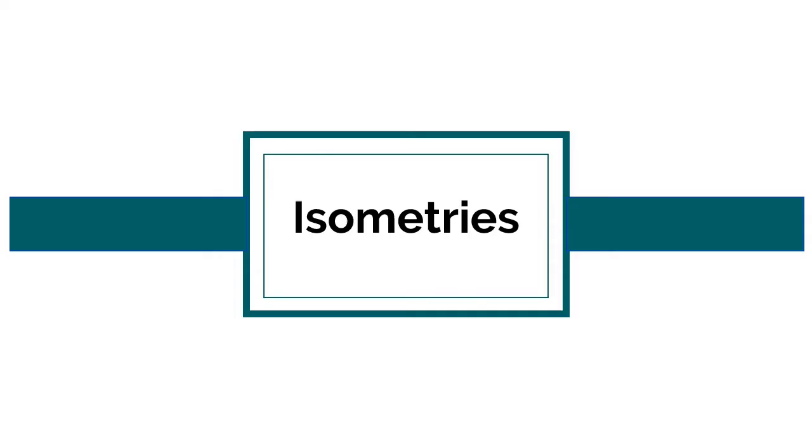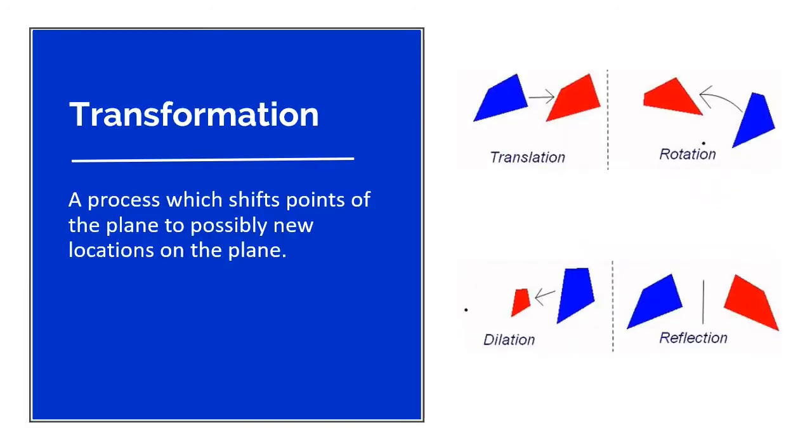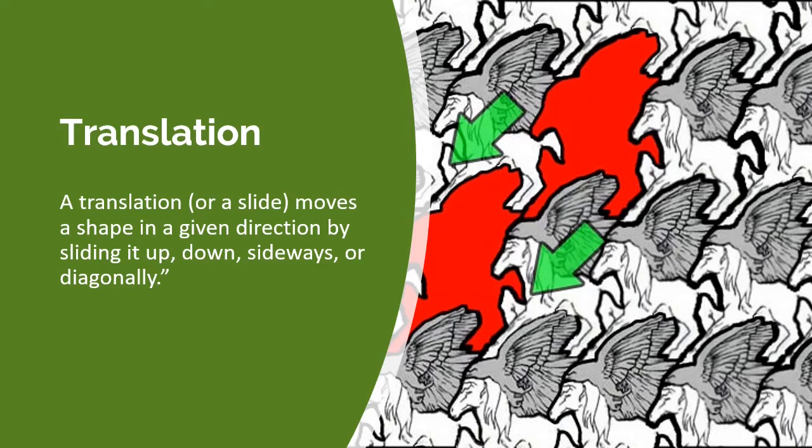Let's now start patterns by looking at isometry. Before we discuss isometries, we will now discuss transformation first. A transformation is a process which shifts points of the plane to possibly new locations on the plane. So the first kind of transformation is a translation. You're just sliding the figure sideways, diagonally, whatever. For example, this figure over here, you slide it, so you have this figure. Meaning to say you translated it.